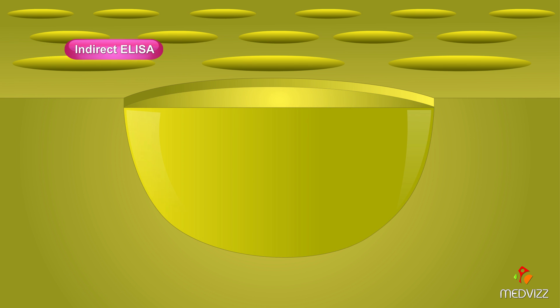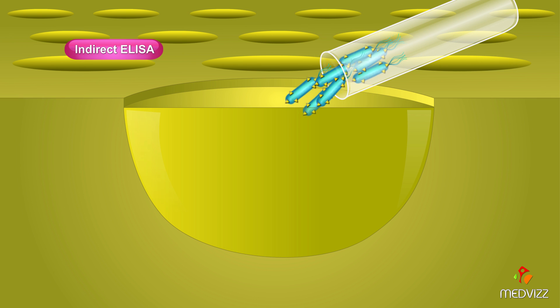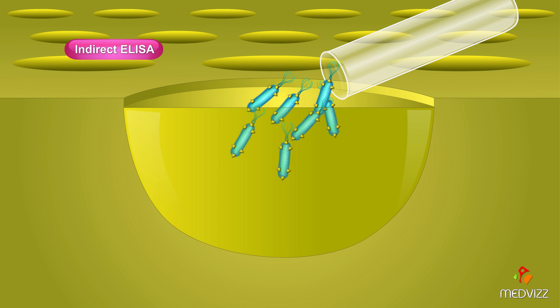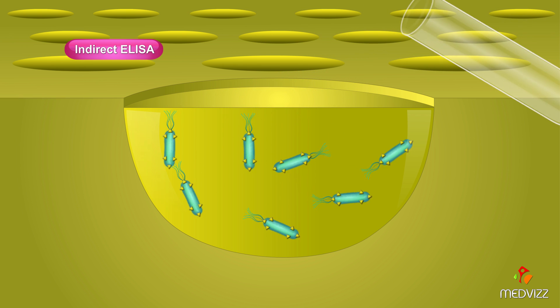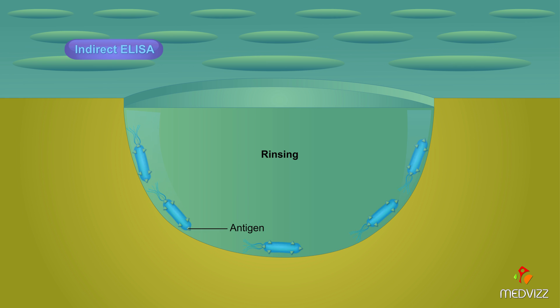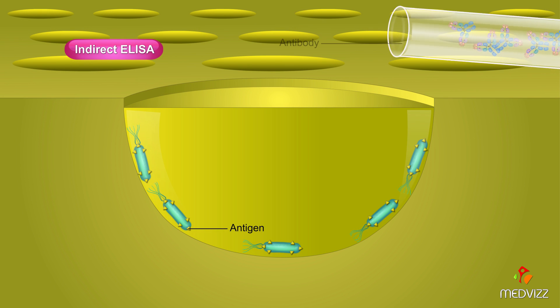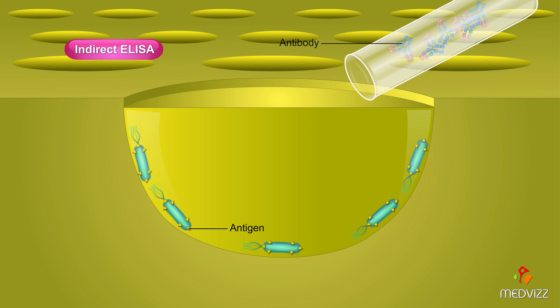In the indirect ELISA, antigen is added to the microtiter plate well and the antigen attaches to the walls of the microtiter plate. After rinsing to remove excess antigen, the serum suspected of containing the antibodies is added.